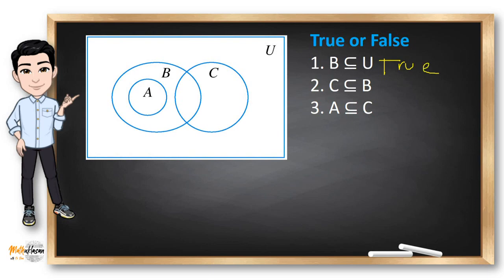How about number 2: Is C a subset of B? You can see that some of the elements of C are not in B, so therefore C is not a subset of B. How about number 3: A is a subset of C. It's obvious that set A and set C have no common elements because they don't overlap. So therefore, this is also false — A is not a subset of C.